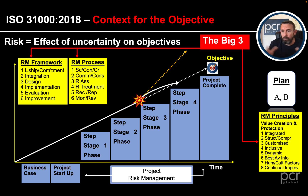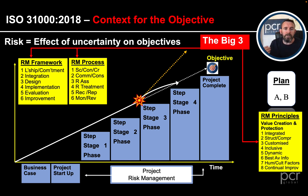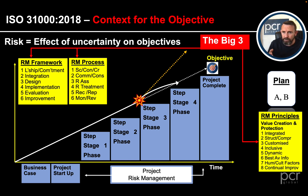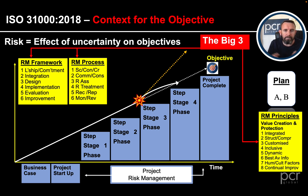The third of the big three is the risk management process, which has six elements. First: scope, context, and criteria - what is the scope of the project, what type of project is it, internal and external context, and the risk criteria. Then communication and consultation - the right people identifying risks at the right time. Then risk assessment, which includes identification, analysis, and evaluation. Then risk treatment - which could include exploiting risk. Finally, recording, reporting, monitoring, and review.